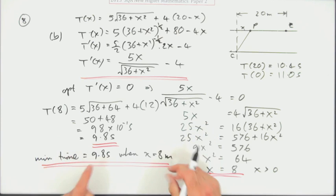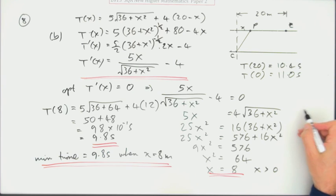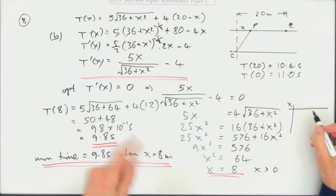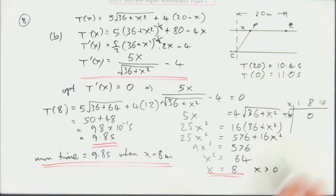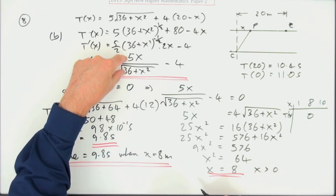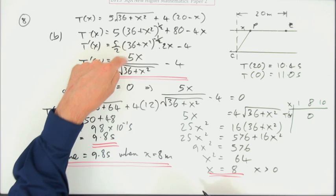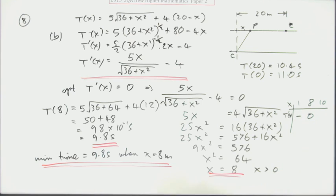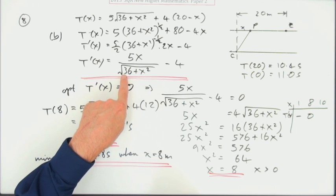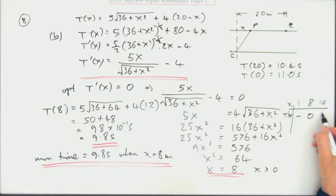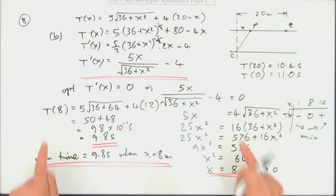Another thing you might do just to play safe is justify that that is in fact a minimum. Shouldn't be necessary going by the nature of this question, but if you felt that you wanted to put it down, then you could put a table. There's x at 8, t dashed of x is 0. Pick a number before and after, like 1 and 10. At 1, you've got 5 over something, but taking away 4 makes that negative. At 10, you've got 50 divided by something less than 12, so that means this answer will be more than 4, so that will go positive, which means you've got a minimum. You can put that down just as a safety measure. Strictly speaking, it shouldn't be relevant to this question, not with an interval.